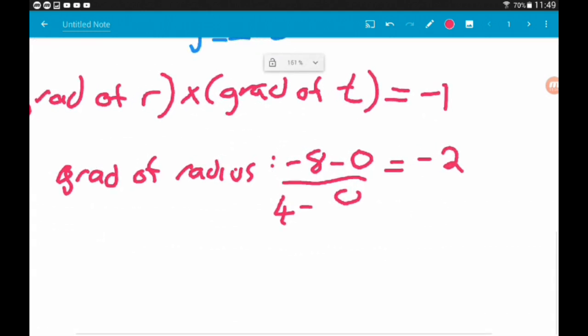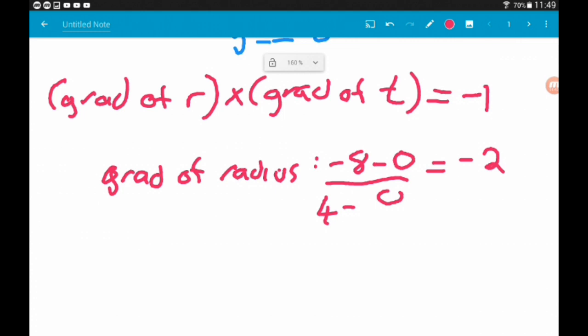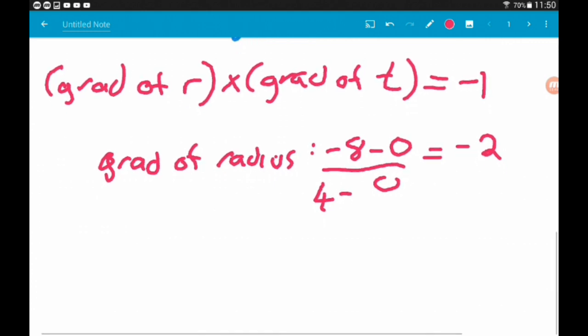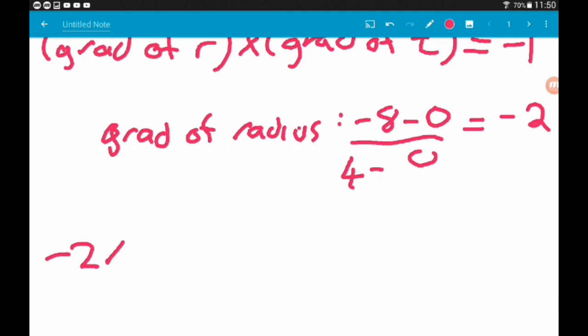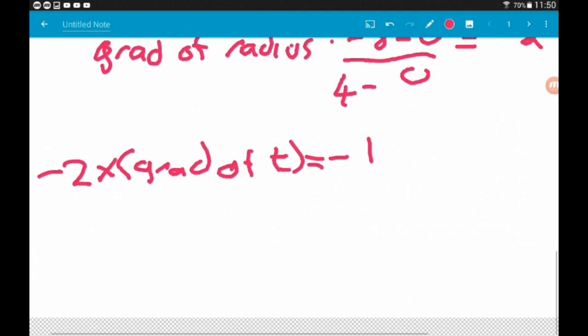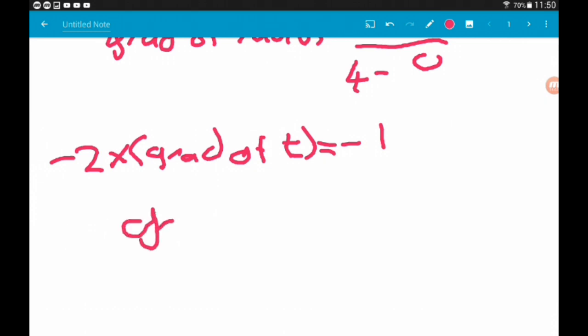Now we know using this equation that the gradient of the radius times the gradient of the tangent is equal to minus 1. We can say minus 2 times the gradient of the tangent is equal to minus 1. If we divide both sides by minus 2, we get the gradient of the tangent is minus 1 divided by minus 2, which is positive 1 half.